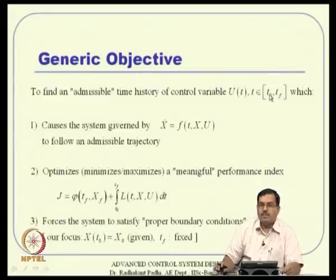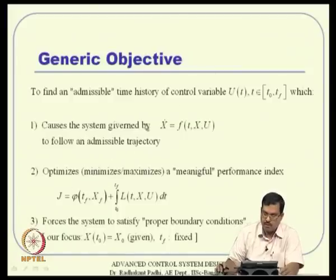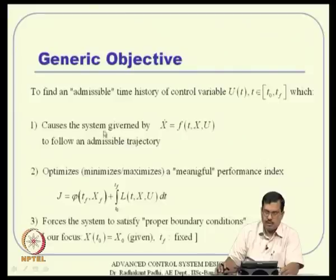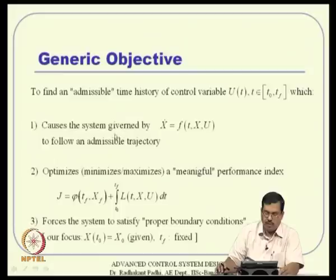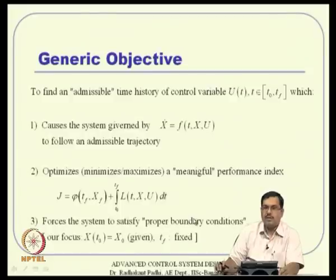The generic objective of any optimal control problem — we have studied this very large class of problems — is to find an admissible time history of the control variable u(t) from t0 to tf which causes the system governed by nonlinear dynamics x-dot = f(t, x, u) to follow an admissible trajectory, optimizes a certain meaningful performance index, and forces the system to satisfy proper boundary conditions.